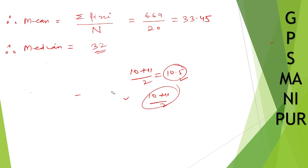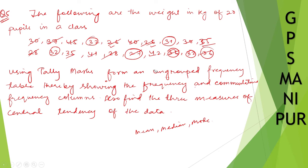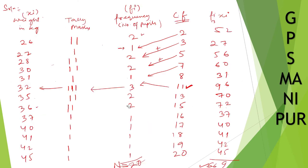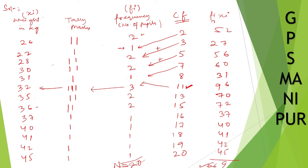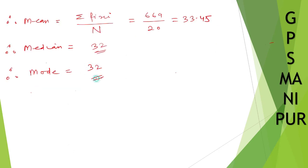Now we need to find out mode. Mode means things that has occurred maximum number of times. If you look here carefully, what number of students has occurred maximum number of time? That is 3, which is maximum in frequency. So 32 is mode. Mode is also equal to 32 because 32 has occurred maximum number of time. That's all, thank you so much, we will meet in the next video.